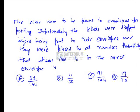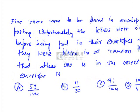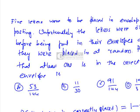Five letters were to be placed in envelopes for posting. Unfortunately the letters dropped before being put into envelopes. We need to find the probability that at least 1 letter is in the correct envelope if arranged randomly. This equals 1 minus the probability that no letter is placed correctly. That is 1 minus (number of favorable cases / total number of cases).